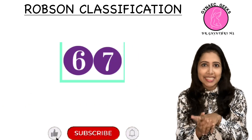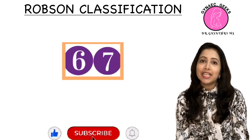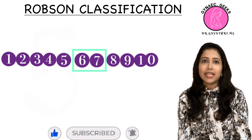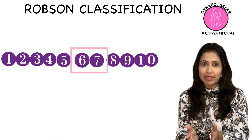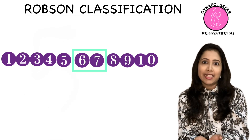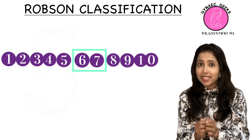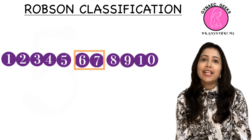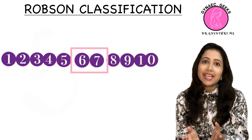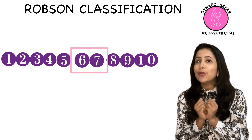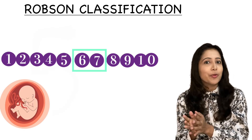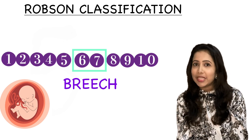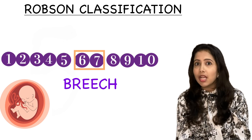Next are Groups 6 and 7. Among all the Robson classification numbers, 6 and 7 are the ones that look like they have beats or a middle curve — and those two represent breech presentation. Group 6 is for a nulliparous female with breech, and Group 7 is for a multiparous female with breech.